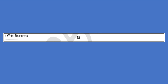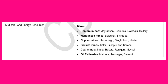Chapter 4 is water resources. Now next chapter is very important from the map perspective — that is Chapter 5, Mineral and Energy Resources. There will be mines located: iron ore mines, manganese, copper, bauxite, coal and oil refineries. These are all the map items from Chapter 5.